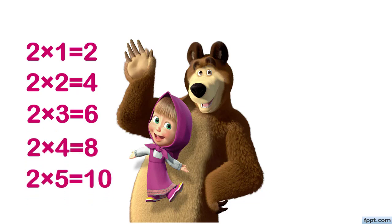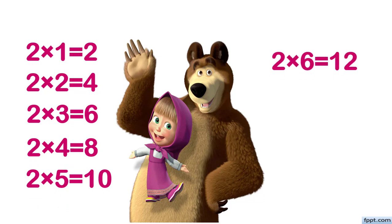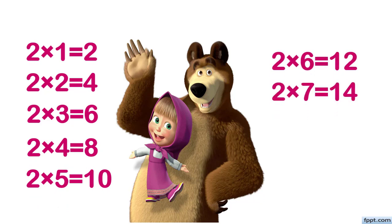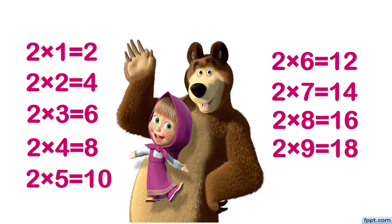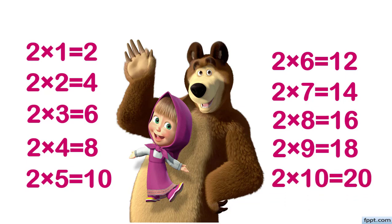Two fives are ten. Two sixes are twelve. Two sevens are fourteen. Two eights are sixteen. Two nines are eighteen. Two tens are twenty. Thank you.